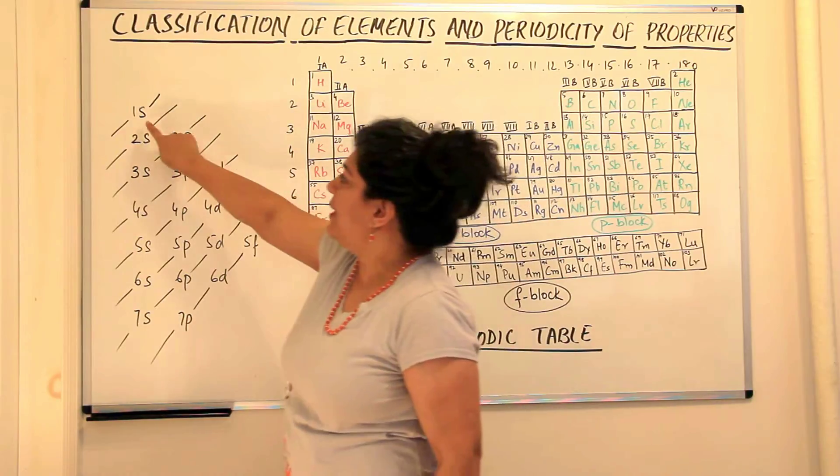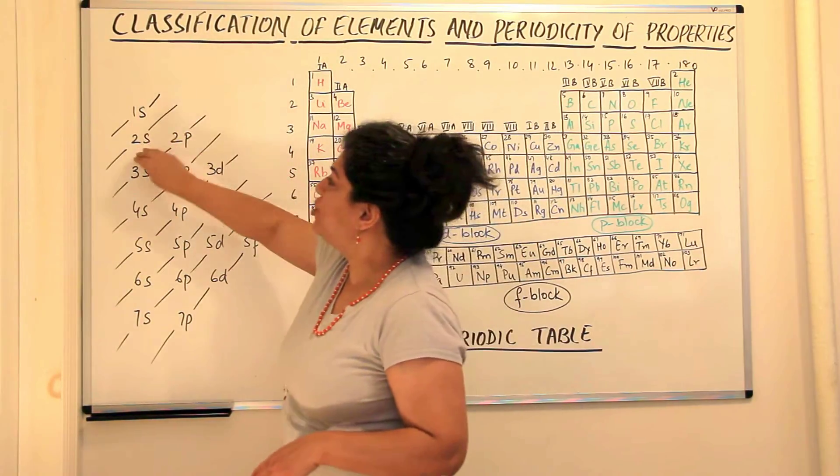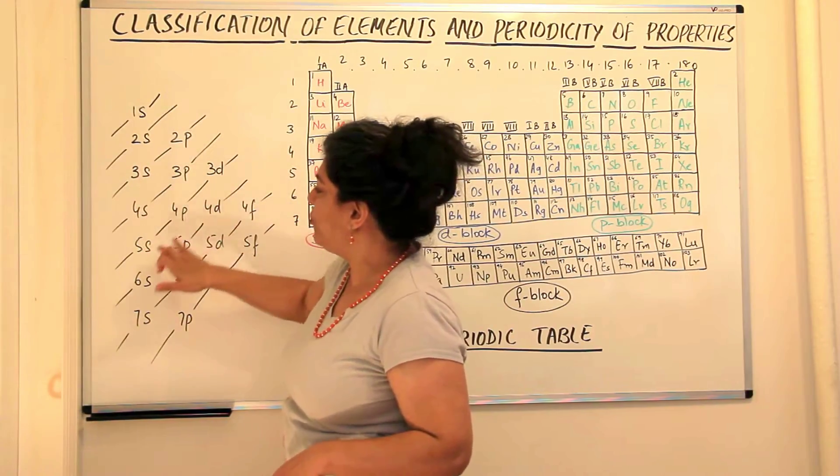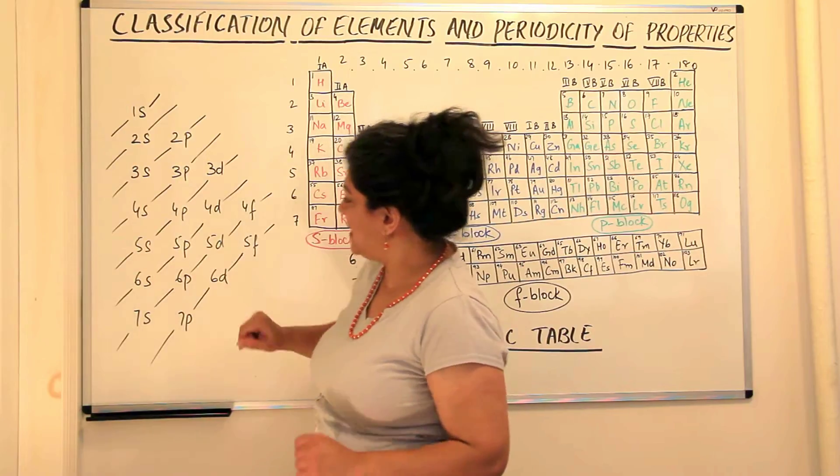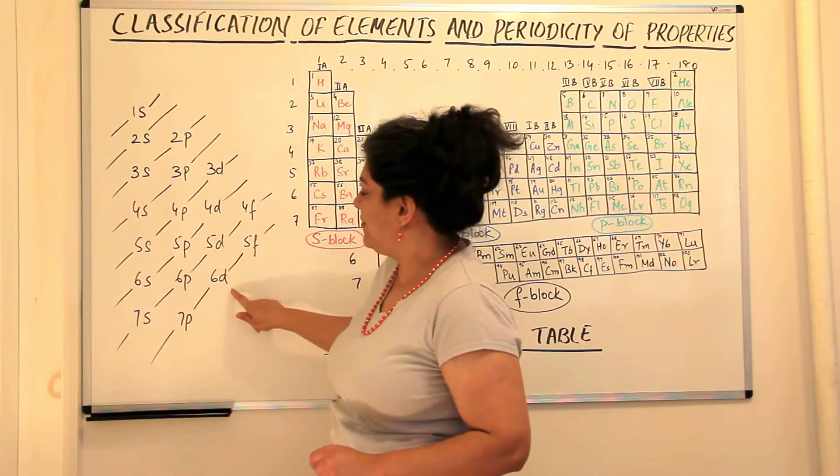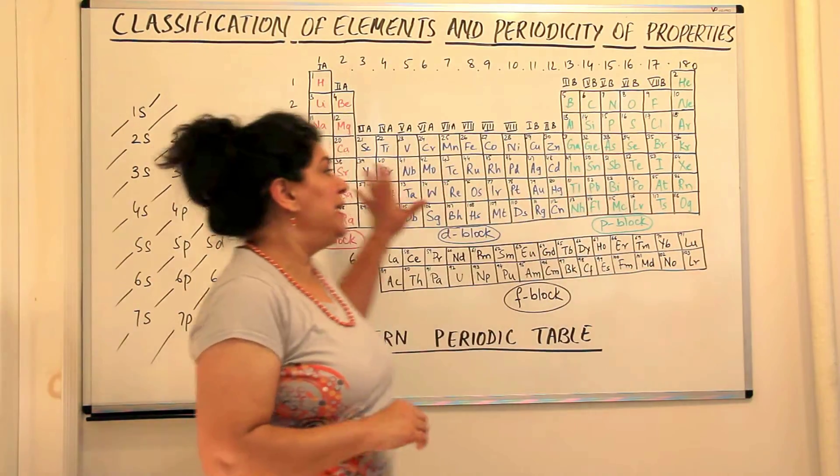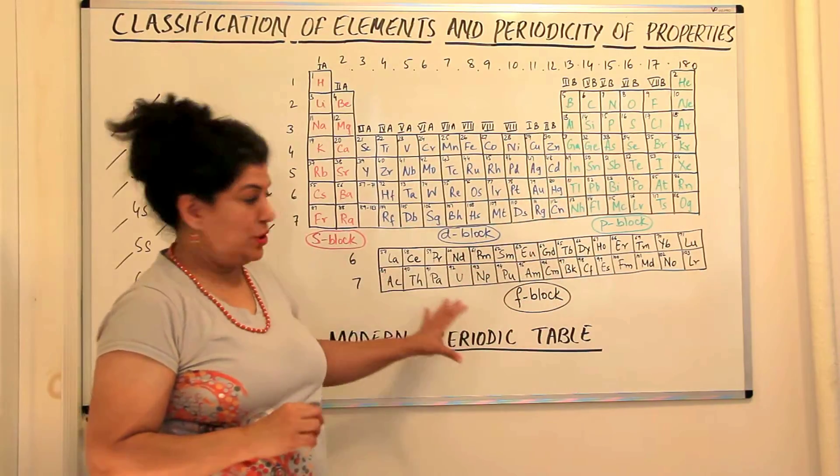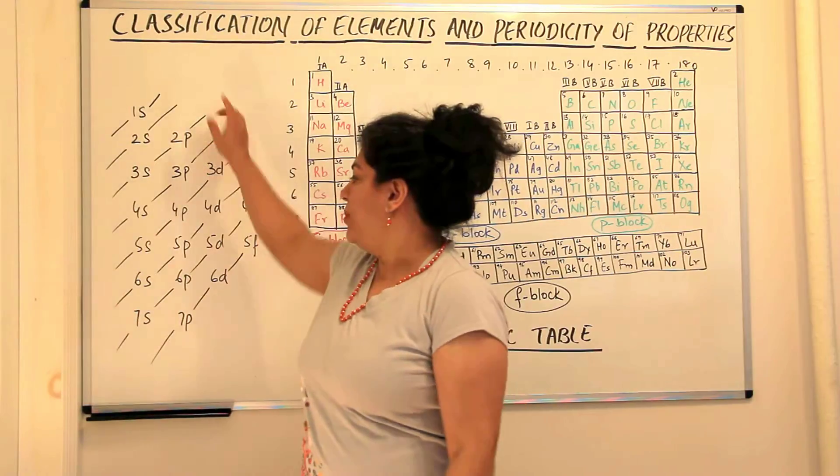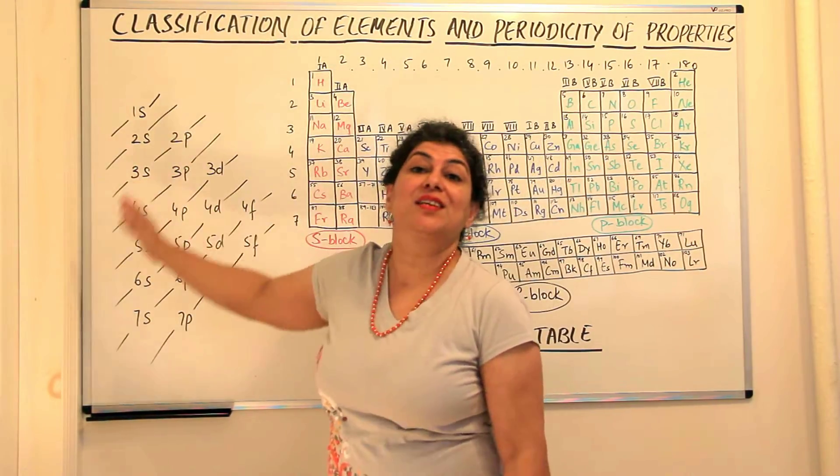We have studied about electronic configuration that the 1S orbitals fill up first and then the 2S orbitals then the 2P orbitals then 3S then 3P, 4S, 3D, 4P, 5S, 4D, 5P, 6S, 4F, 5D, 6P, 7S, 5F, 6D and 7P. Within these orbitals all the 118 elements that we talk of today in the periodic table, all of these are accommodated in these orbitals and they fill up in this sequence.